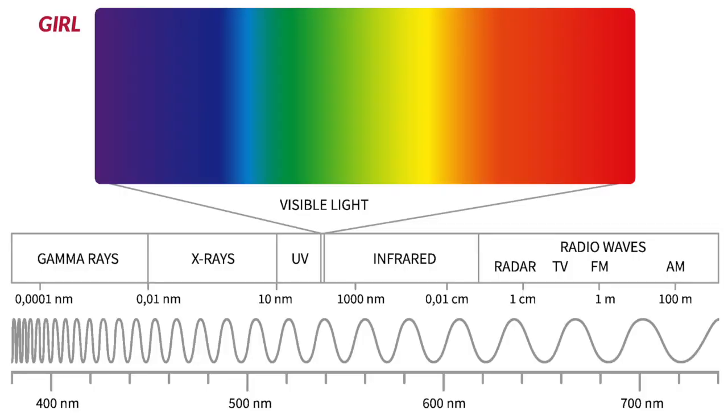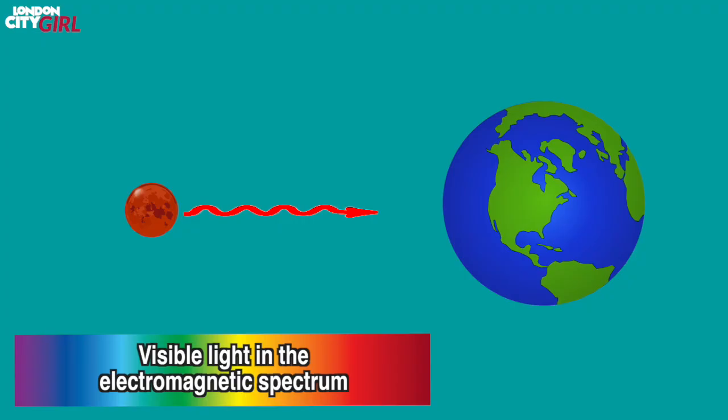The electromagnetic spectrum is the entire range of light that exists, from radio waves to gamma rays. Visible light is the electromagnetic radiation within the portion of the electromagnetic spectrum that can be perceived by the human eye. Longer wavelengths correspond to a shift toward the red end of the electromagnetic spectrum.